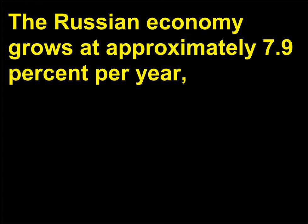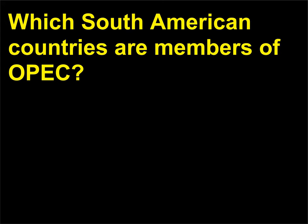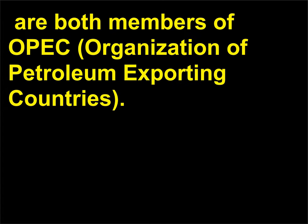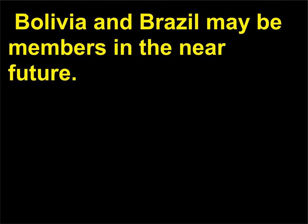The Russian economy grows at approximately 7.9% per year, with most of the growth coming from the energy sector. Ecuador, at 500,000 barrels per day, and Venezuela, at 2.3 million barrels per day, are both members of OPEC, the Organization of Petroleum Exporting Countries. Bolivia and Brazil may be members in the near future.